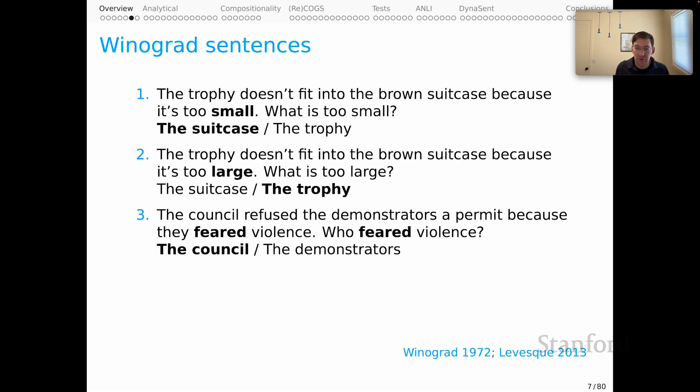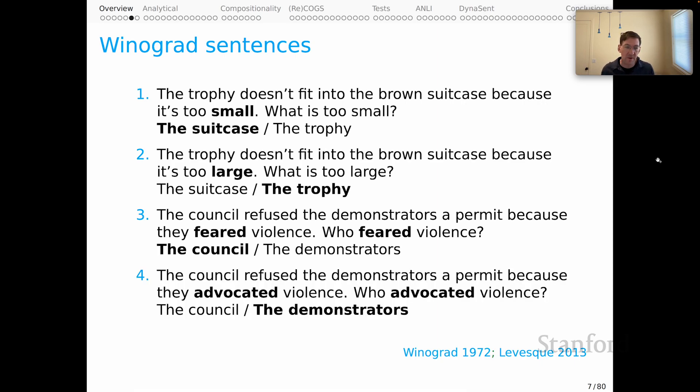Here's a case that keys more into kind of social norms and roles that people play. The council refused the demonstrators a permit because they feared violence. Who feared violence? The human answer is the council based on kind of stereotypical roles for demonstrators and politicians versus the council refused the demonstrators a permit because they advocated violence. Who advocated violence? Again, we default to saying the demonstrators because of our default assumptions about the roles that people will play. And the idea is for a model to get these responses correct, it too needs to kind of deeply understand what's happening with these entities and with the social norms involved.